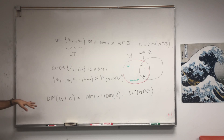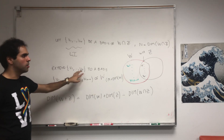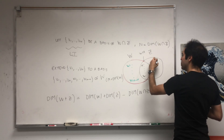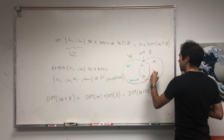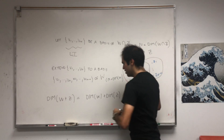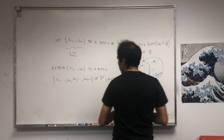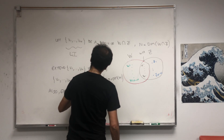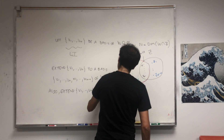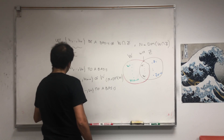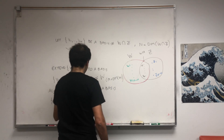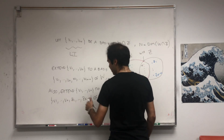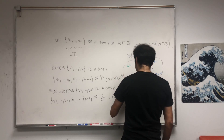On the other hand, v1 up to vn is also a linearly independent subset of Z, so we can extend it to a basis of Z. Let's add vectors z1 up to z(k-n), extending v1 up to vn to a basis v1 up to vn, z1 up to z(k-n) of Z. Notice this has n plus (k-n) = k vectors, where k is the dimension of Z.